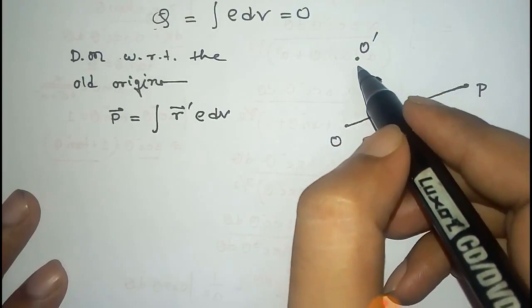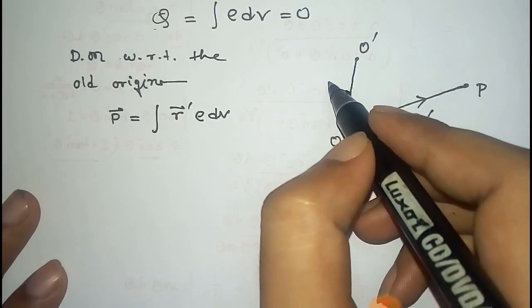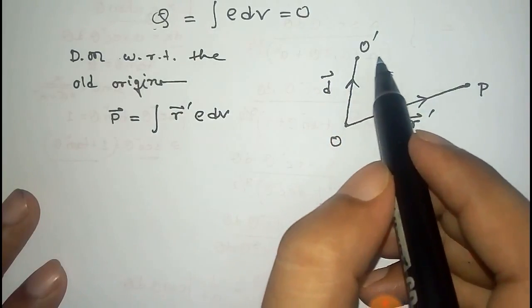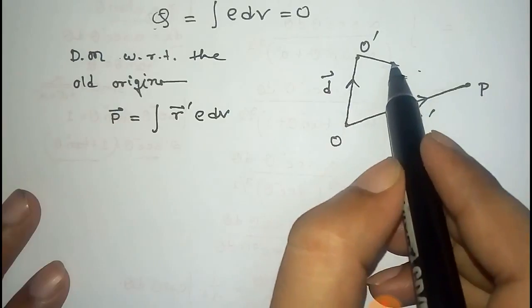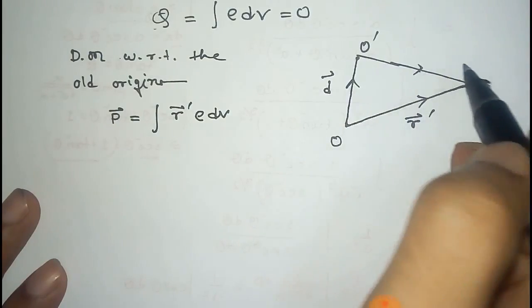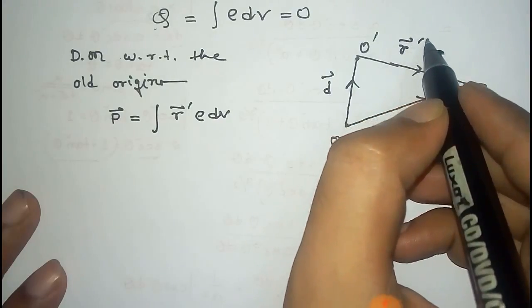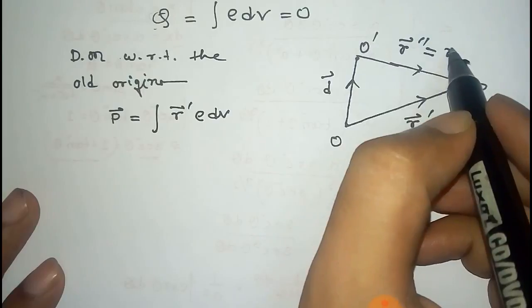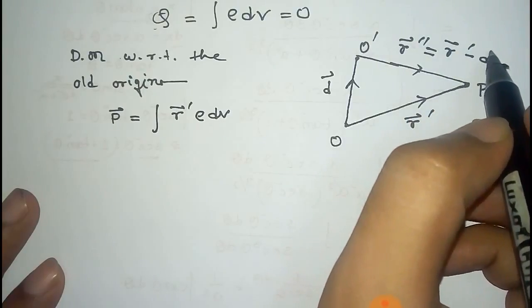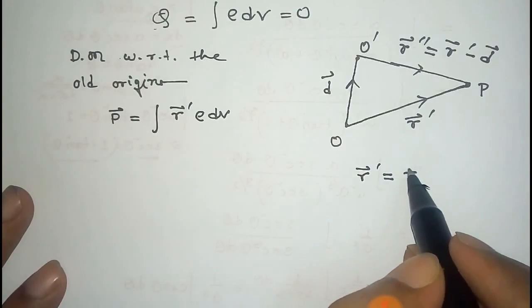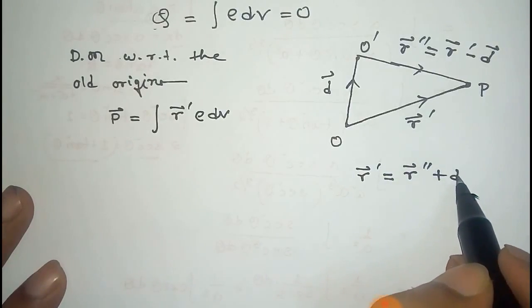Now if we transfer this origin to O prime, that is a new coordinate system, and this is the distance d vector. So now O prime to P is given by the vector r double prime. By vector identity, we can say that r vector equals r double prime minus d vector.